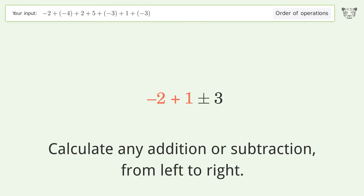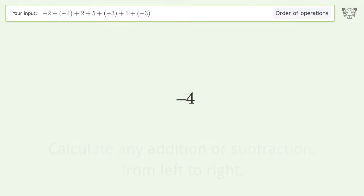Negative 2 plus 1 equals negative 1. Negative 1 minus 3 equals negative 4. And so the final result is negative 4.